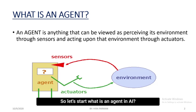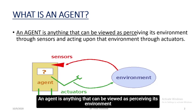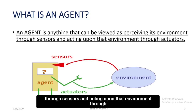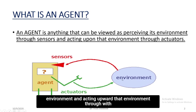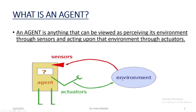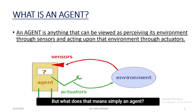What is an agent? An agent is anything that can be viewed as perceiving its environment through sensors and acting upon that environment through actuators. An agent perceives input from the environment and acts upon that environment with the help of actuators. But what does that mean simply?